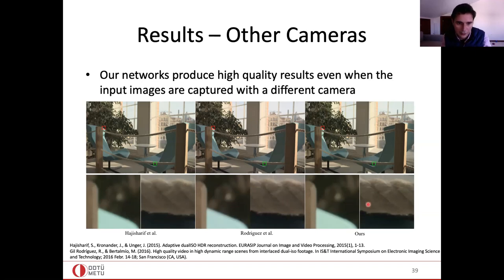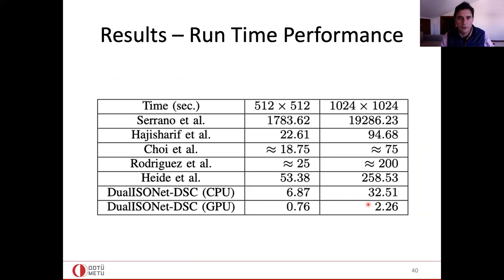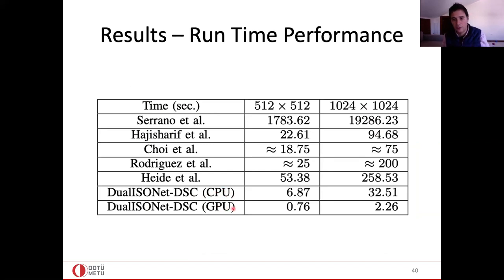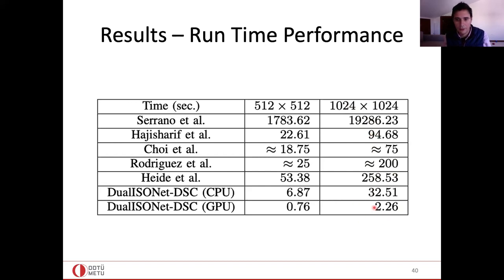Regarding runtime performance, our method is faster than the compared methods. On a GPU, we can process a one megapixel image in two seconds. Our algorithm scales linearly, so a five megapixel image would take around 10-11 seconds. We had to test on smaller images because some compared methods could not finish processing large images.